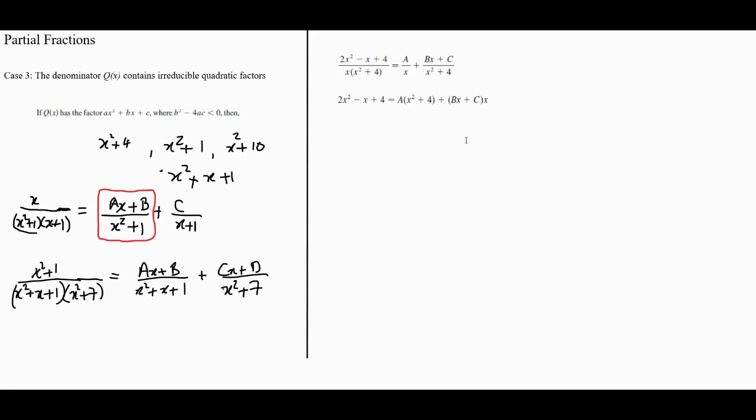Next, we want to calculate the values of the constants. The way we proceed is we have one value, x = 0, we can employ. If we let x = 0, this gives us 4 on this side and 4A on the other side, with nothing from the other terms. Therefore, this implies that A is in fact 1.